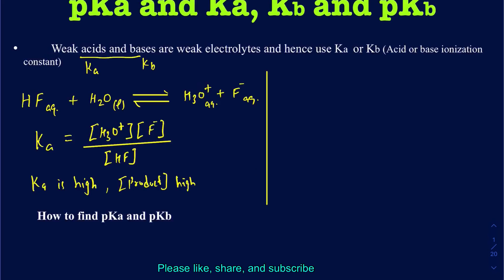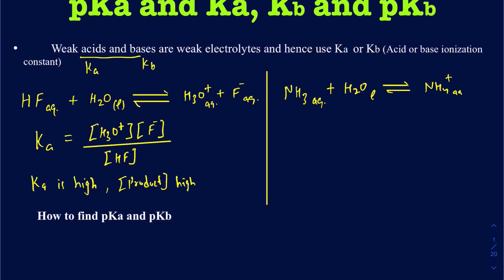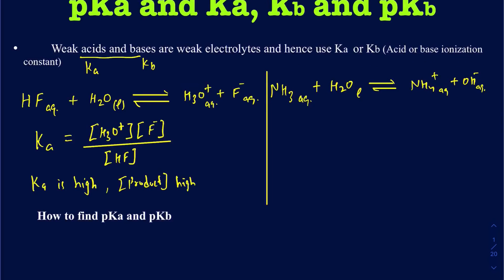For a weak base like ammonia: NH₃ (aqueous) reacts with water (liquid) and sets up an equilibrium to produce ammonium ion NH₄⁺ plus OH⁻ (aqueous). We write its equilibrium constant in the form of Kb. So the Kb equals the concentration of NH₄⁺ times the concentration of OH⁻, divided by the concentration of NH₃. Again, liquid water is not included because it's just the solvent.